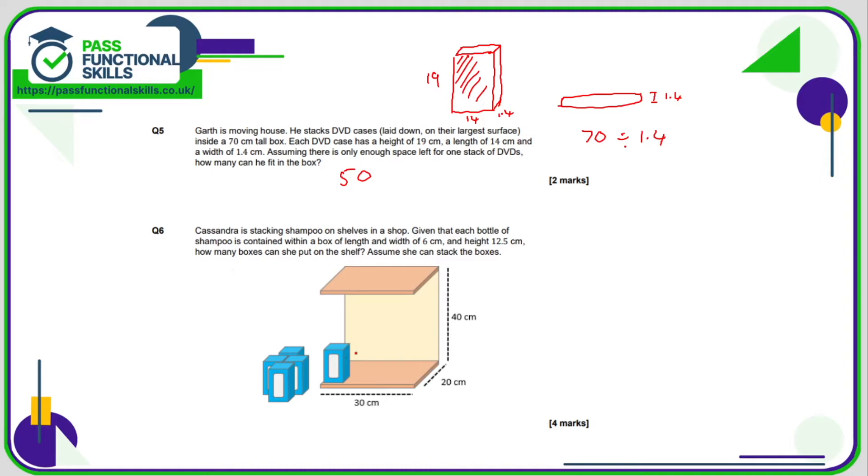So for question number 6, we want to know how many of these bottles of shampoo can be stacked on the shelf. So for me, it's not really a question of volume, but more just how many can be stacked in each direction. So for example, we know that the box is 6 centimeters by 6 centimeters. So how many 6s go into 30? Or 30 divided by 6 is 5. So across the width, we can get 5 in.